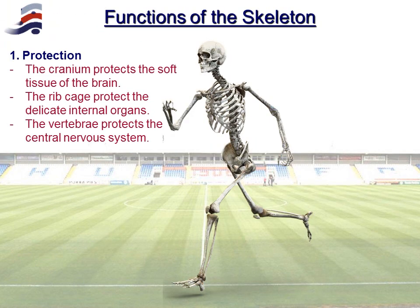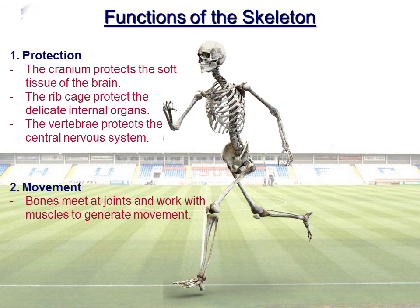Looking in more detail — protection, which we've touched on previously: the cranium protecting the brain, the rib cage protecting the vital organs, and the vertebrae protecting the central nervous system. Movement: where two bones meet we call this a joint, and once we apply muscles to the skeleton, that allows us to generate movement. All the movement we use in sport is done through joints and muscles working together.